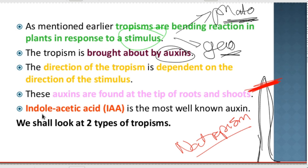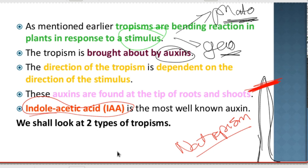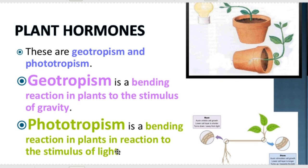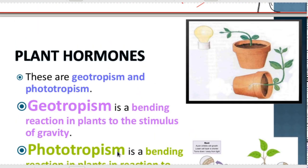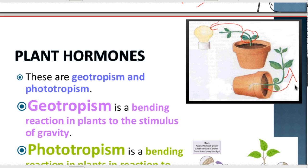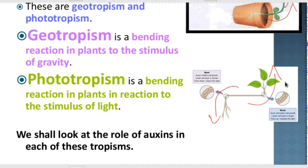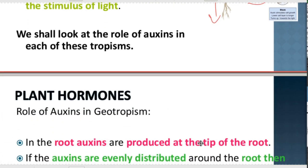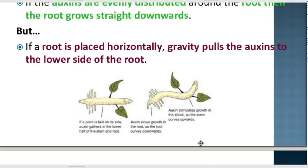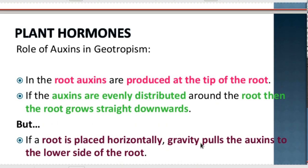You do not need to know these names in such detail — you only need to know that there is auxin. Let's take a look at the different tropisms. With geotropism, we can see the plant is bending towards gravity, and with phototropism it is bending towards the light. With geotropism, the root will bend towards gravity but the stem will bend away from gravity — it has to go upwards. We also get hydrotropism, but you don't need to know about that — just geotropism and phototropism.